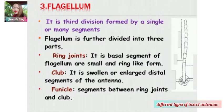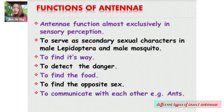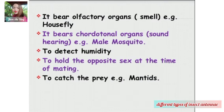What are the functions of antennae? Antennae function almost exclusively in sensory perception. They serve as secondary sexual characters in the male Lepidoptera and male mosquito. They are used to find its way, to detect danger, to find food, to find the opposite sex, and to communicate with each other, like ants. Antennae also bear olfactory organs for smell — for example, house flies.